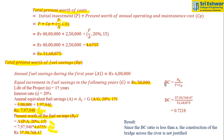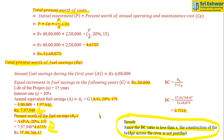Finally, the BC ratio is 0.7218. Since the BC ratio is less than 1, the construction of the bridge across the river is not justified. This is the final answer.